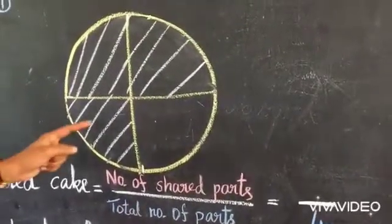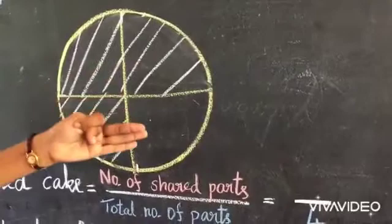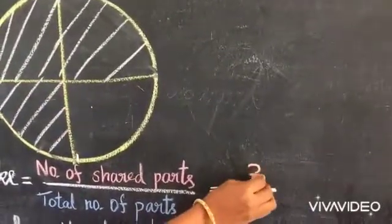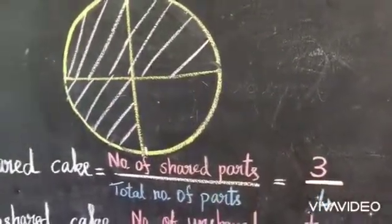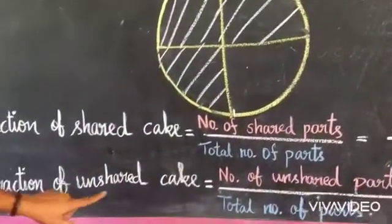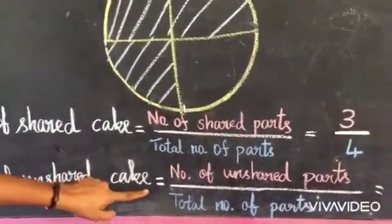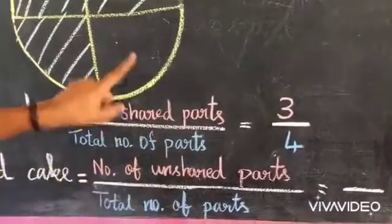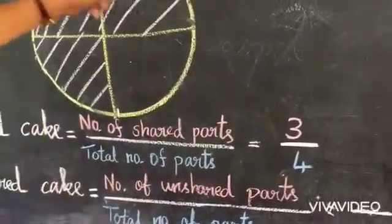Here, how many parts are shared there? Three. Yes, three is the numerator. Fraction of unshared cake is equal to number of unshared parts divided by total number of parts.